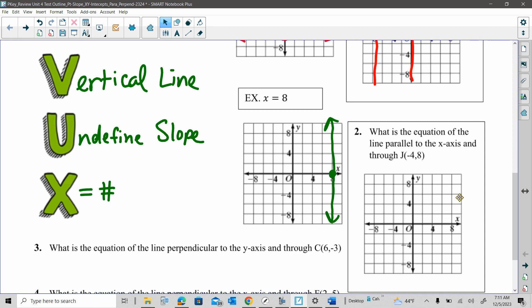And then for something like this, the key information again, parallel to the x-axis. So we want to plot the point negative four, eight, which is here. We want parallel to the x-axis, so it would end up being a horizontal line. So my equation for something like this, remember, if I just get the point and it's horizontal, it has to match the y-axis, the y-coordinate, so this would be y equals eight.